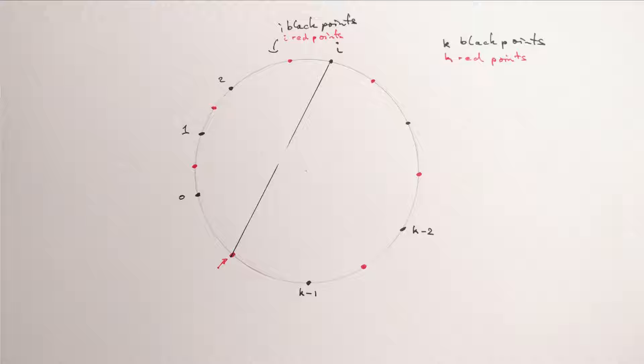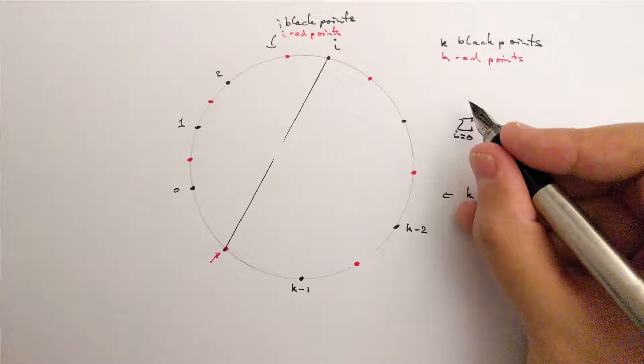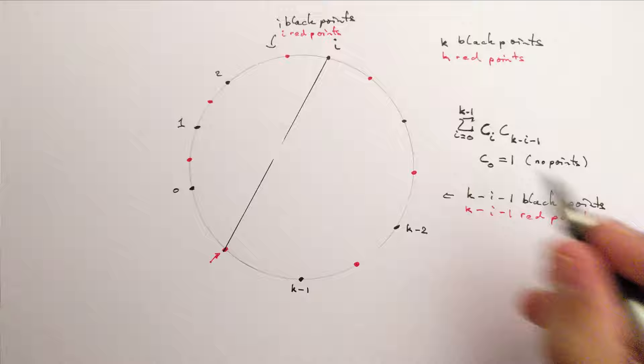We can't have lines going from one side to the other, since they would cross the line that's already drawn. So you really have two smaller independent problems. The number of ways to match both sides is the product of the numbers of ways to match either side. And the number of ways to match the whole thing is the sum over the choices of i. So we'll get the Catalan numbers again. There are c_k ways to match those points.